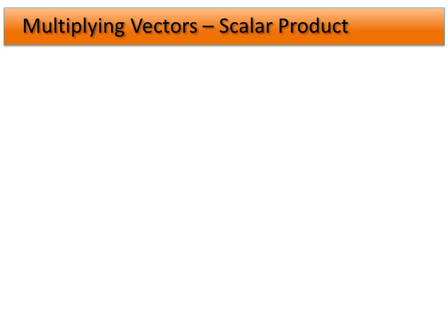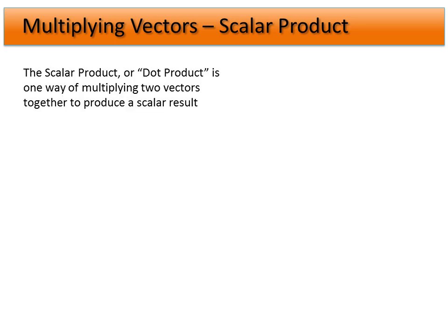Sometimes we'll have the need to multiply two vectors together, and there are actually two ways to do that. We're going to look at the first way here. We call this the scalar product, or the dot product, and it's one of the two major ways of multiplying two vectors together. The interesting thing is when we take two vectors, say vector A and vector B, and multiply them together using the dot product, we get a scalar result — two vectors multiplied together using the dot product become a scalar. There's no direction associated with it at the end.